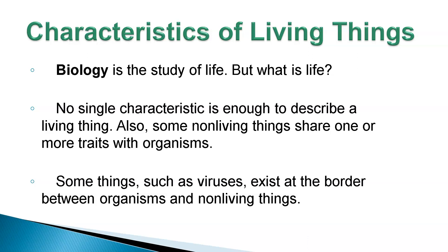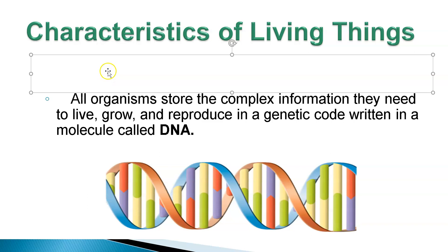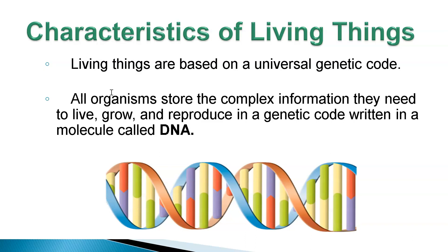Let's walk through these characteristics a bit. The first one I want to really hone in on is DNA. You have roughly 3 billion letters in your genetic code. That code makes up you, and we all have different codes. This is DNA. Living things are based on a universal genetic code — this is the blueprint that makes you, you.